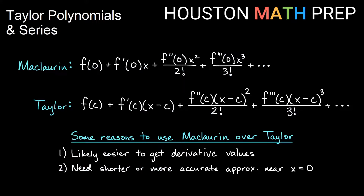Some reasons to use McLaurin over Taylor: it's probably easier, in most functions, to plug in zero than to plug in a lot of other numbers and evaluate those derivatives, so it may be shorter. You may also need to simply approximate the function very well right around its y-intercept, right around x equals zero, and it would require fewer terms to get a very nice approximation around that y-intercept if you start approximating close to where you need that good approximation.